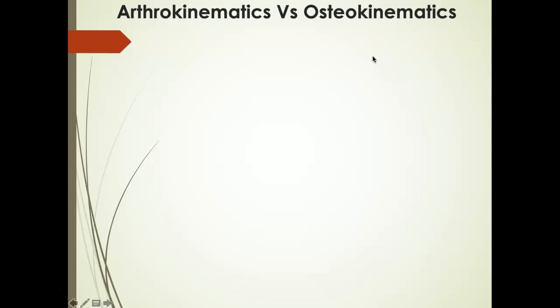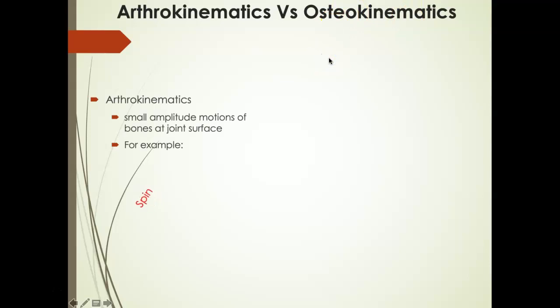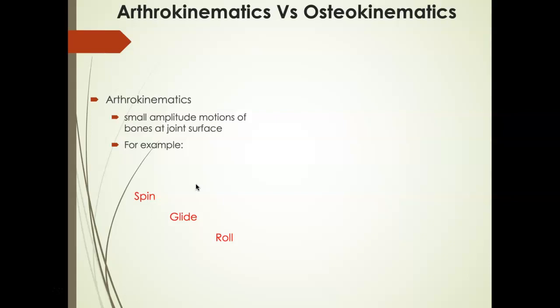Now we need to talk about two different concepts: arthrokinematics and osteokinematics. Arthrokinematics are the very small amplitude motions of bones at a joint surface — a bone spinning across another, a bone gliding across another, and a bone rolling across another. These occur between bones as very subtle motions of millimeters, maybe even centimeters. These arthrokinematic motions are important for osteokinematic motion, which is what we visualize — the gross movements at the joint.